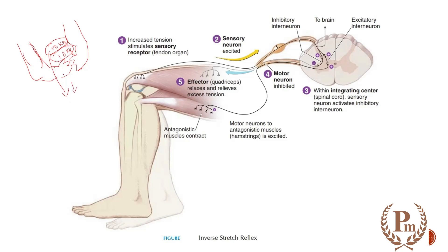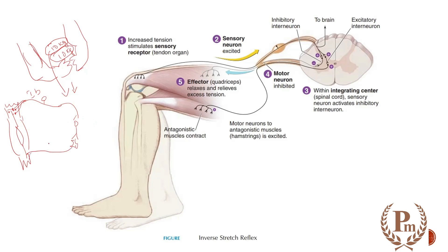The mechanism involves the biceps muscle, which has muscle spindles inside the muscle belly. In the tendon parts are the Golgi tendon organs. These Golgi tendon organs are carried by 1B fibers to the spinal cord, where they synapse onto an inhibitory interneuron. This is a glycinergic inhibitory interneuron because it releases glycine as an inhibitory neurotransmitter. This in turn acts on the alpha motor neuron, reducing impulses and causing relaxation. This response is called the inverse stretch reflex.